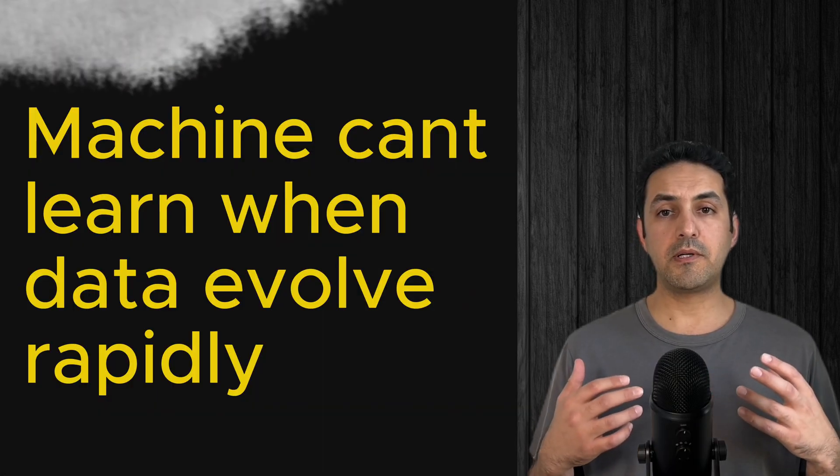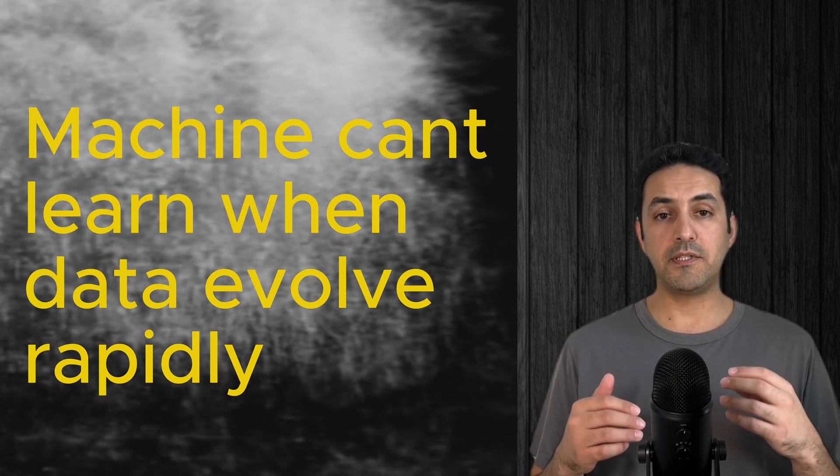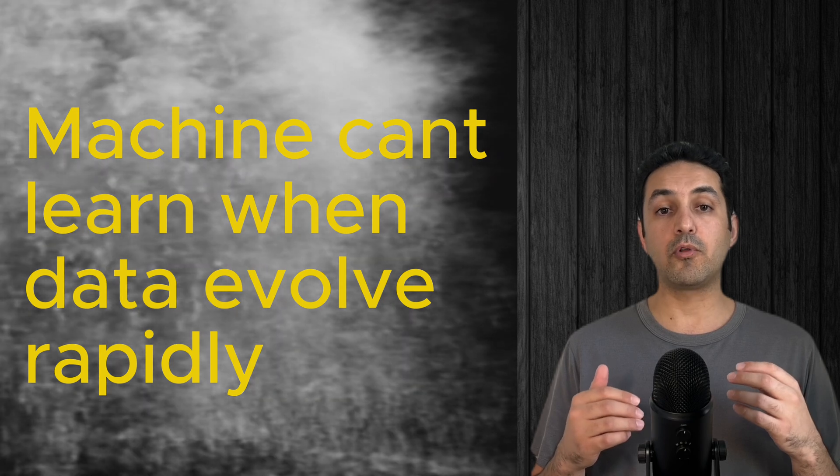In this video, I'm going to explain how data scientists figure out if the data they have collected can be used for predicting future events. This is important because if a system is in a state of rapid change when the data is collected, the predictions based on that data won't be accurate.